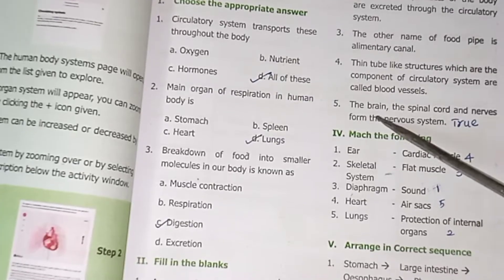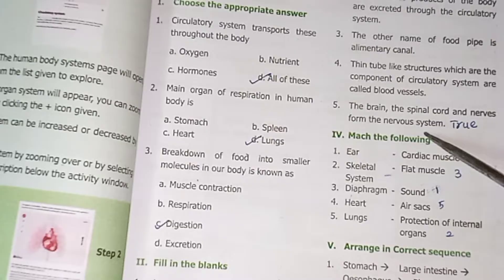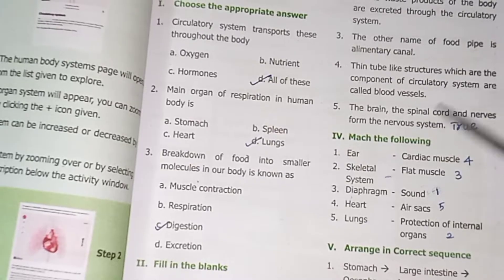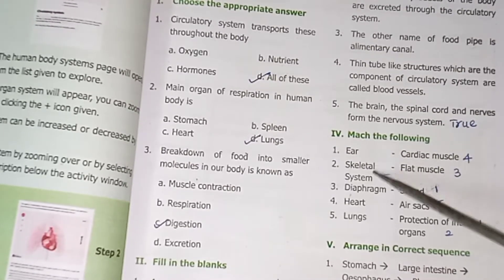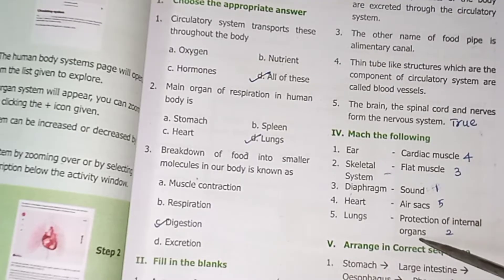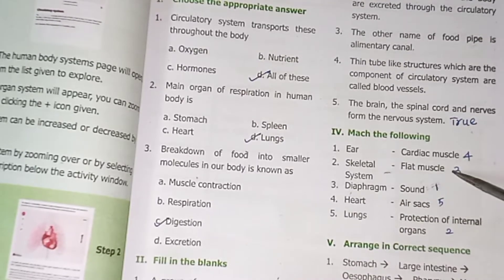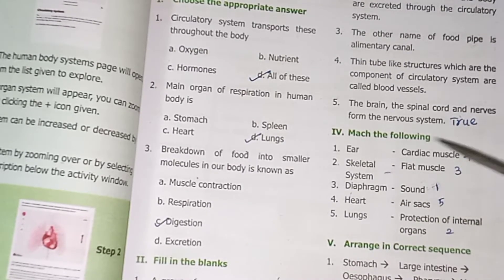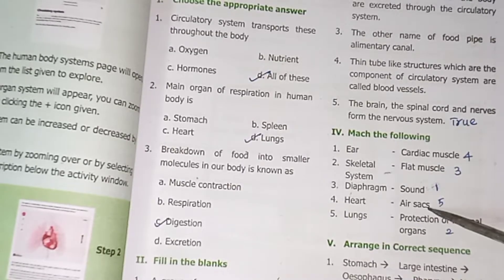The brain, the spinal cord, and nerves form the nervous system — True. Match the following: Air-sacs, Sound, Skeletal system — protection of internal organs, Diaphragm — flat muscles, Heart — cardiac muscles, Lungs — air sacs.